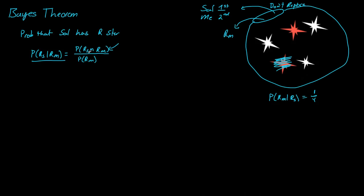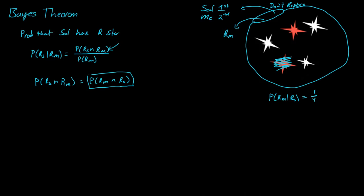But we do know that the probability that Sal got a red star and I got a red star is equal to the probability of me getting a red star and Sal getting a red star. These two are equal. So if we just rewrite — if we solve for this one, which by doing that we're solving for this one since they're equal — how would you solve that?